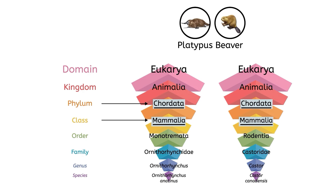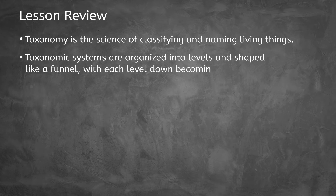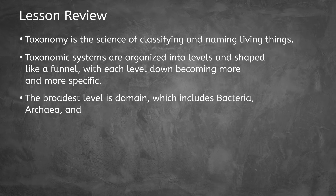Earth is home to millions of strange creatures that aren't all what they seem, so taxonomy is an incredibly useful tool that helps scientists classify living things in a very structured and universal way. And with that, we have finished our lesson covering the basics of taxonomy. We have learned that taxonomy is the science of classifying and naming living things. Taxonomic systems are organized into levels and shaped like a funnel, with each level down becoming more and more specific. The broadest level is domain, which includes bacteria,